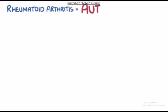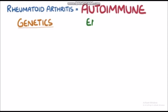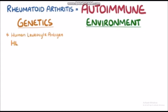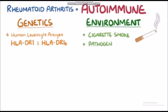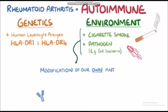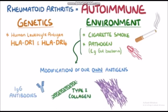Rheumatoid arthritis is an autoimmune process typically triggered by an interaction between a genetic factor and the environment. For example, a person with a certain gene for an immune protein, like human leukocyte antigen HLA-DR1 and HLA-DR4, might develop rheumatoid arthritis after being exposed to something in the environment, like cigarette smoke or a specific pathogen, like a bacteria that lives in the intestines. These environmental factors can cause modification of our own antigens, such as IgG antibodies or other proteins like type 2 collagen or vimentin.